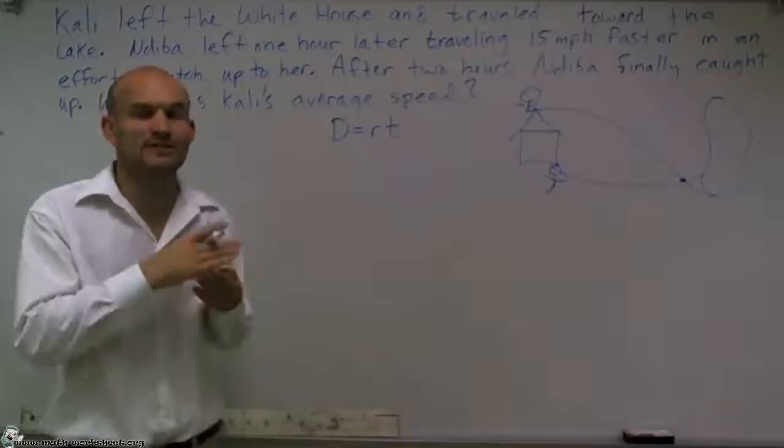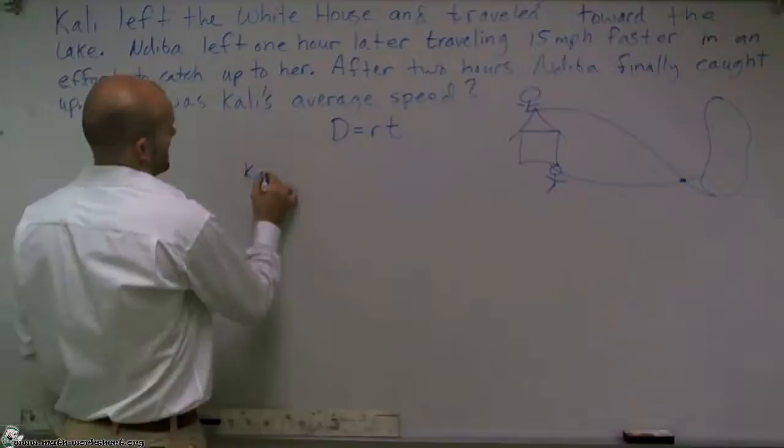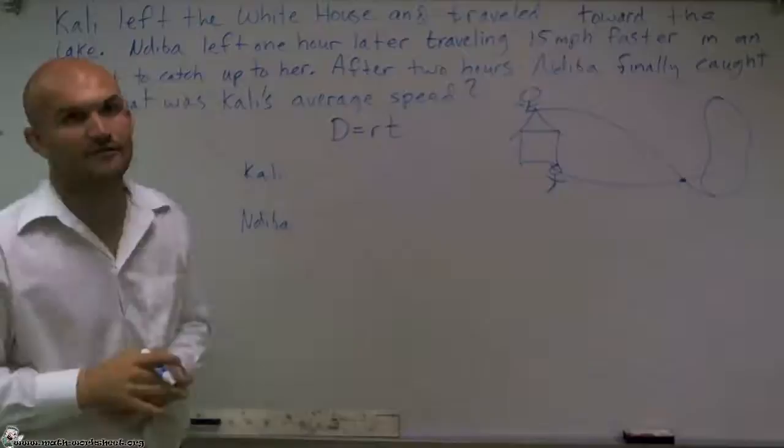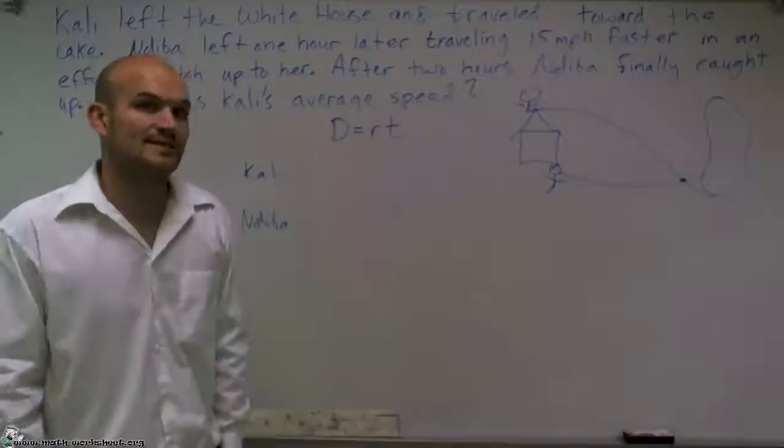So what I'm going to do is I notice that I have two different people with two different distance, rate, time equations that I can set up. The first one I'm going to set up is Callie, and then I have Nadeeba. What I'm going to do is try to fill in as much information as I possibly can using the formula distance equals rate times time for both of them.